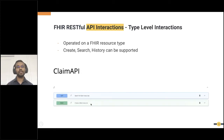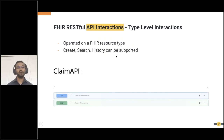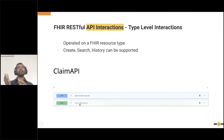When it comes to the FHIR REST API, there are three levels of interactions. The first level is the type level interaction — you operate on a FHIR resource type and can expose create, search, and history operations. Here you can see an example: the Claim API with a search operation (GET) and a create operation (POST). You do an HTTP call to the claim endpoint and ask the FHIR server to create a new claim or retrieve all claims.